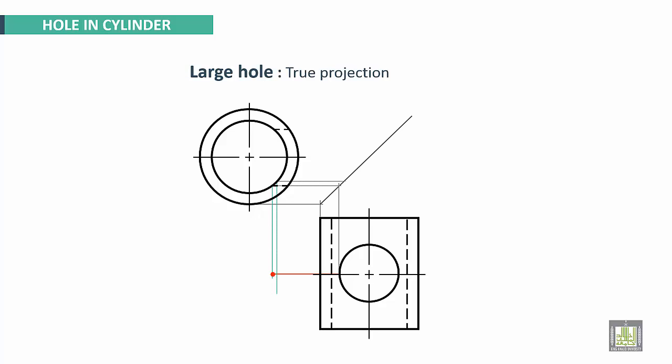And make a projection on the axis point by point. We'll continue point by point. This point is the same here. This point is the same here, and we'll continue.